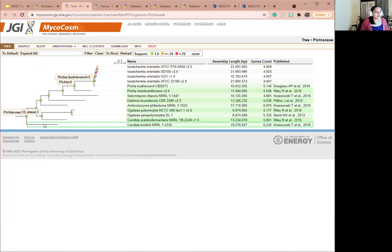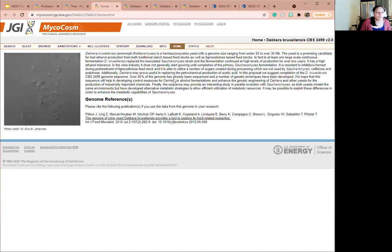Next, we will be clicking on Dekkera bruxellensis. This will take us to the homepage for Dekkera. This gives some background information, a brief summary of the species for users unfamiliar with it. And you can click on just about any species on MycoCosm and get a similar homepage with different information depending on the species.